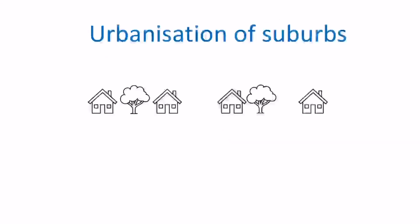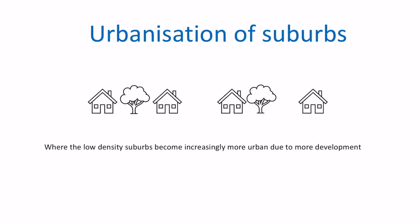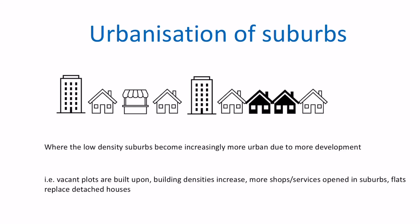At a similar time, there's this last process happening roughly alongside urban regeneration: the urbanisation of suburbs. Suburbs are generally low-density places, which is what attracts people to them. But as urban areas face more pressure and lack of space, those low-density suburbs are becoming more urban — we're seeing more development and building. The trees that were there have disappeared, replaced by flats, shops, and services; detached houses have gone, replaced by bigger buildings; vacant lots have been built on. This is the process where low-density areas become more dense: the urbanisation of suburbs.